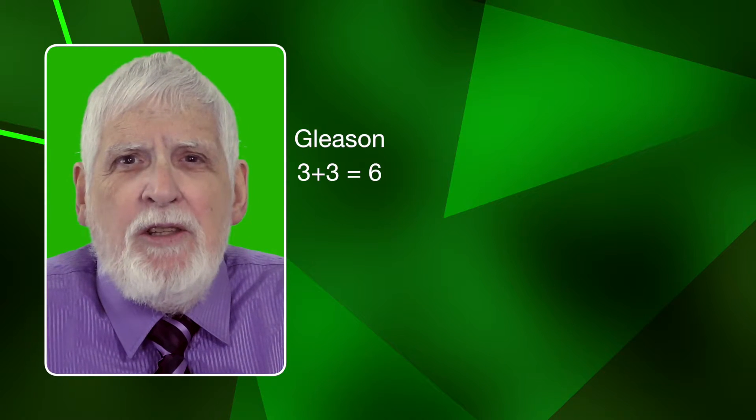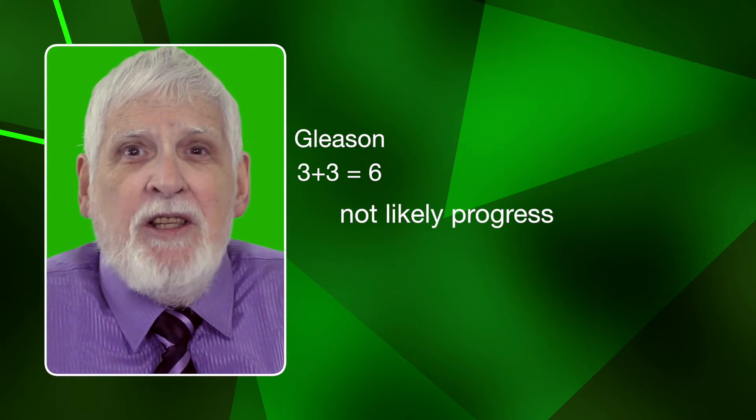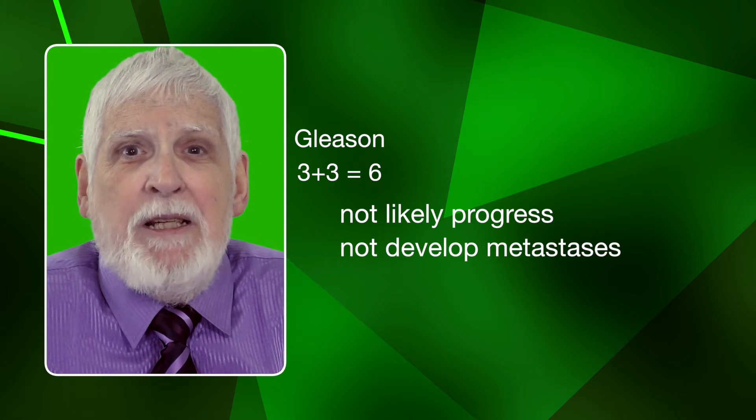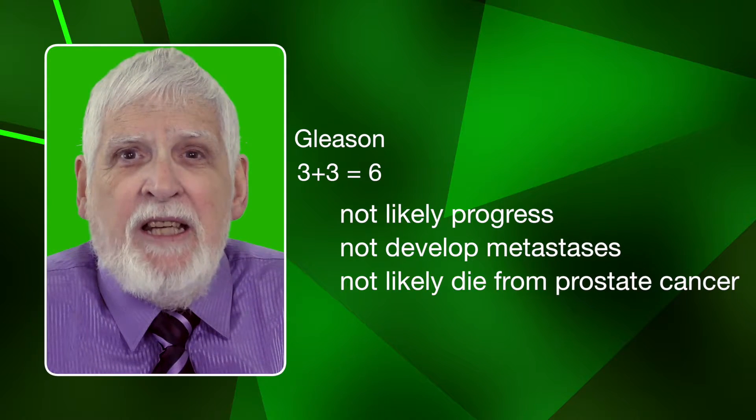Now we have improved the Gleason grade, we come to the problem of the Gleason score. The big problem is this: Gleason score of 3 plus 3 equals 6 represents a cancer that will not likely progress nor develop metastases, and this patient will not likely die of prostate cancer.